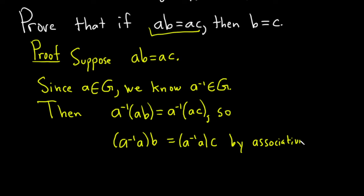Right? Because these are elements in a group a, b, and c, and so they certainly satisfy the associativity property.